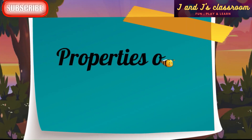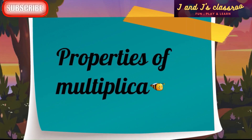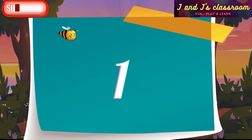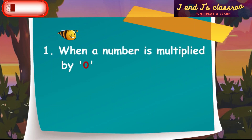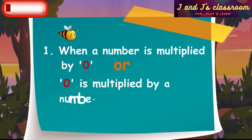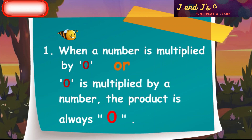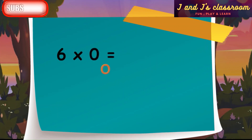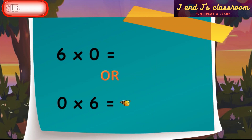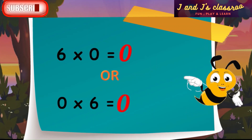Now let me share the properties of multiplication. First property: when a number is multiplied by 0, or 0 is multiplied by a number, the product is always 0. For example, 6 cross 0 or 0 cross 6 — the product is 0.